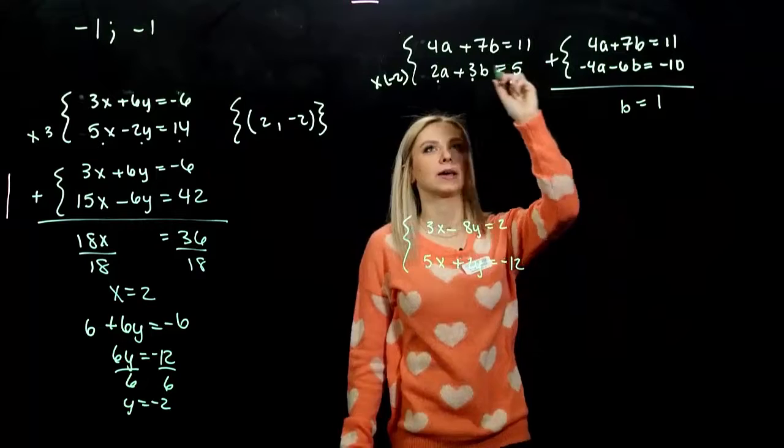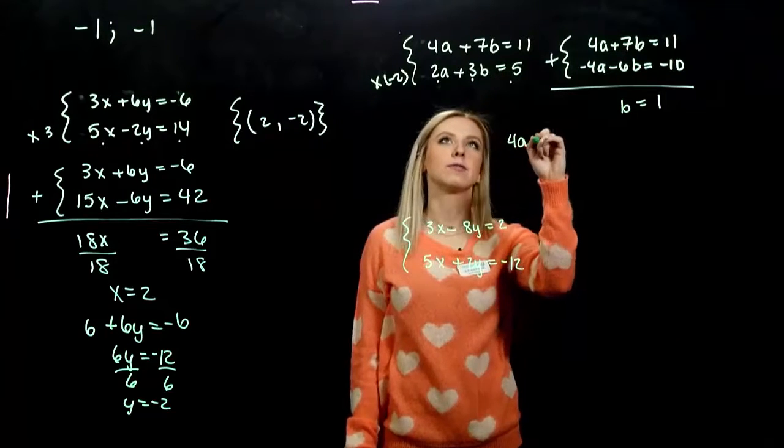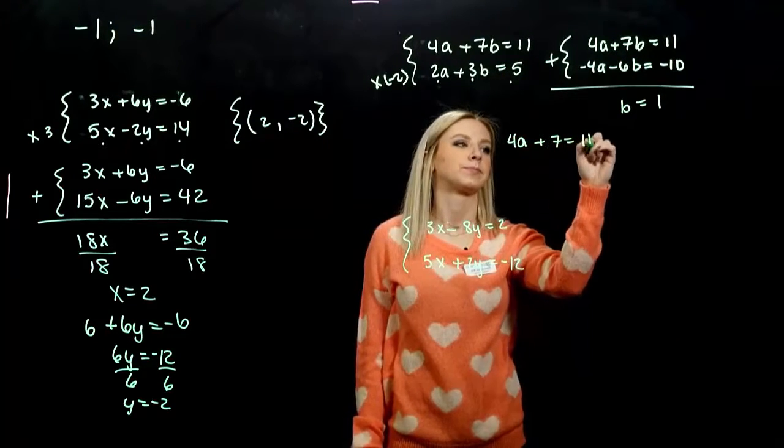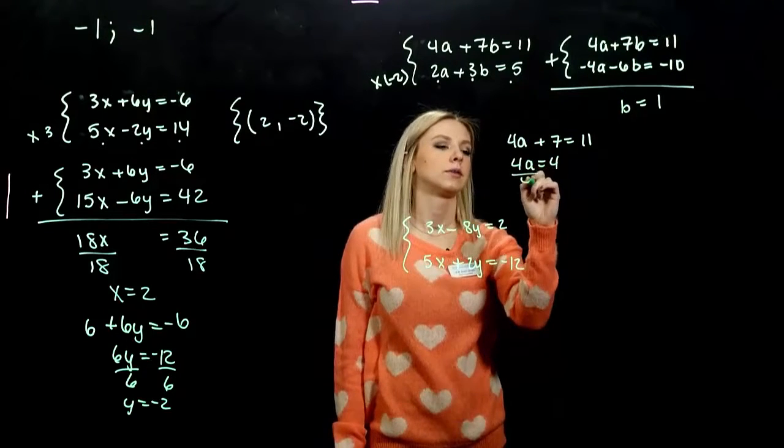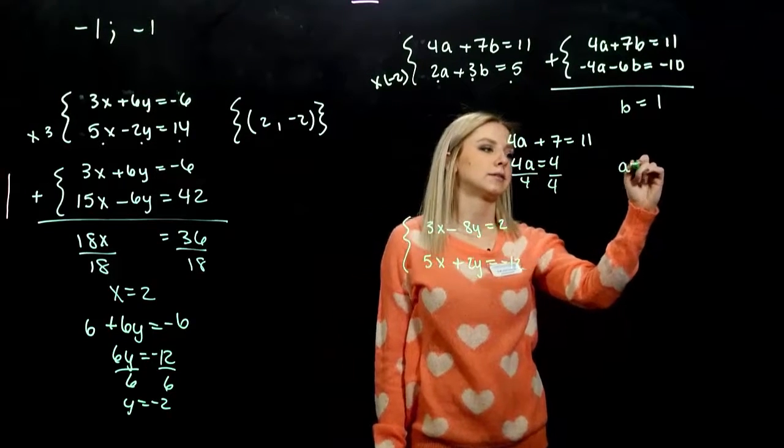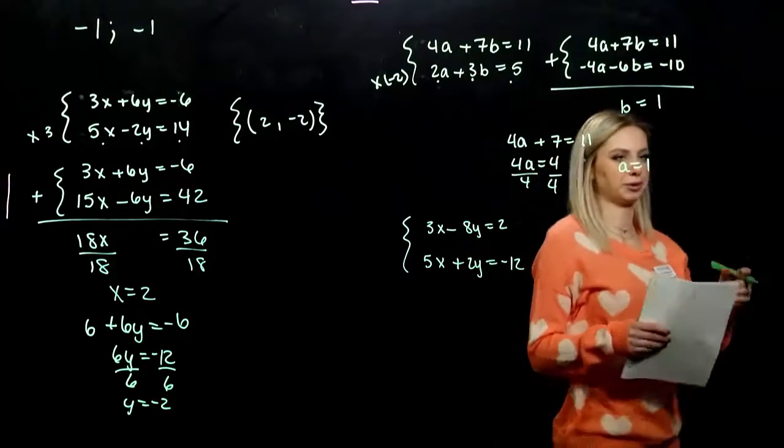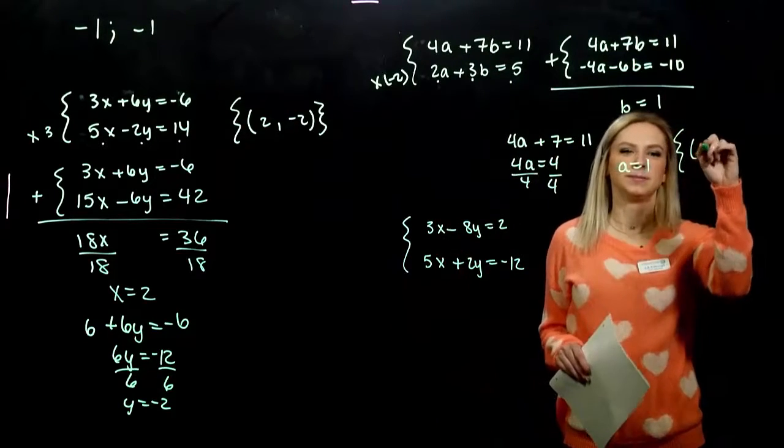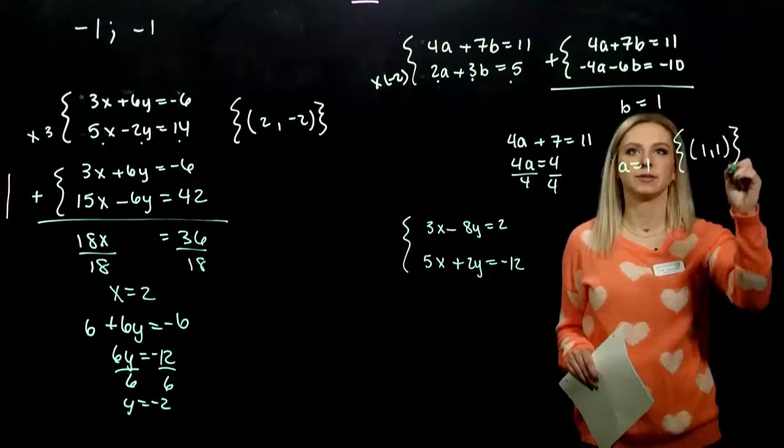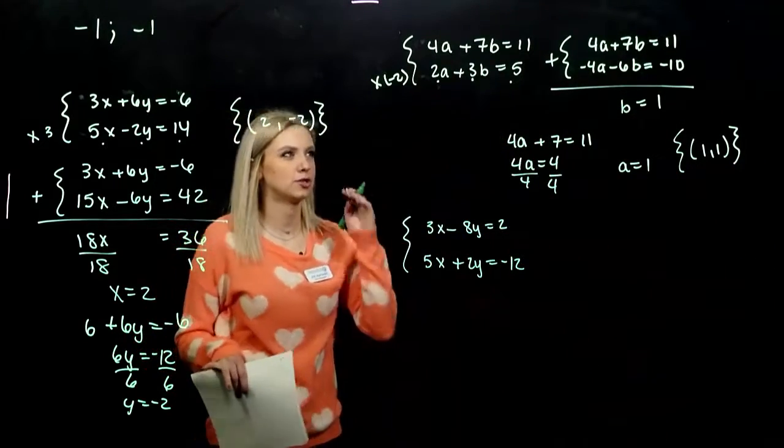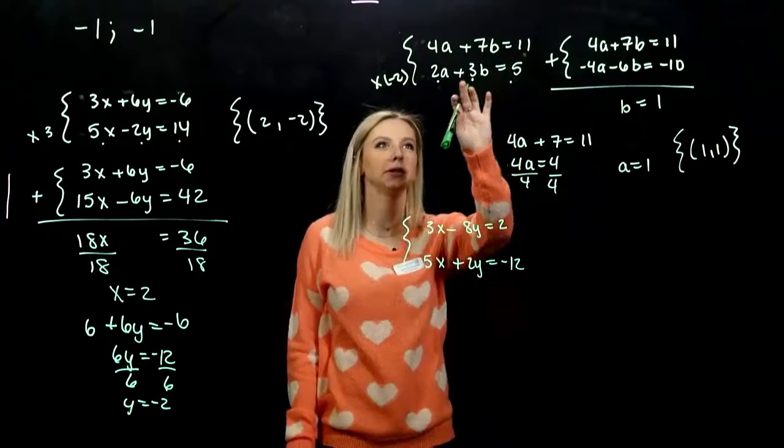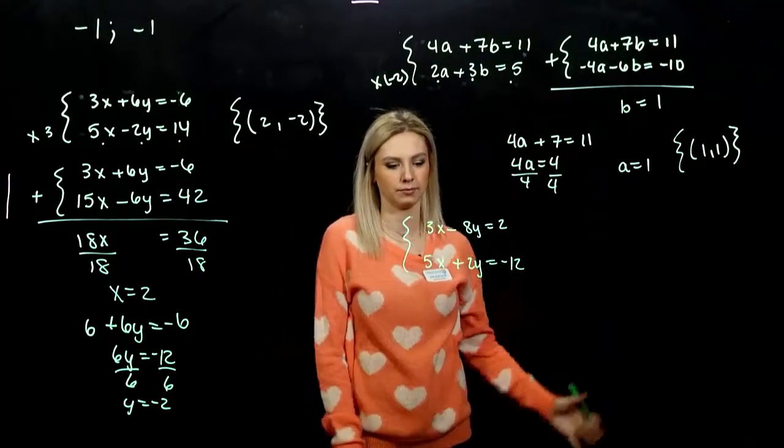We can plug back in to solve for A. I'm going to plug it into the first one. So 4A is equal to 4. If we divide by 4, A is also equal to 1. That's a boring case. Solution set goes through the point (1,1). If we aren't convinced, plug back in and check. Is 7 and 4 really 11? Is 3 and 2 really 5? Yeah. That one's pretty quick.